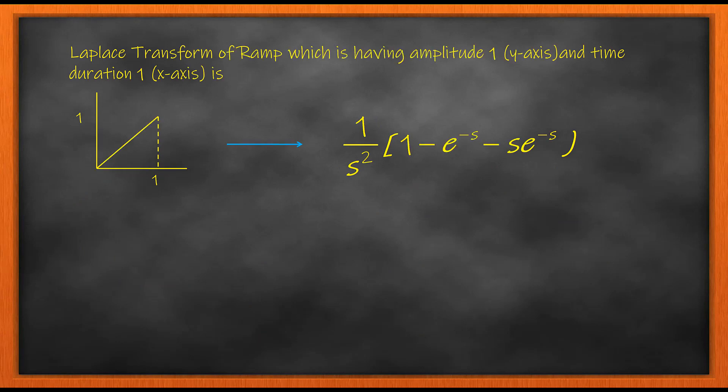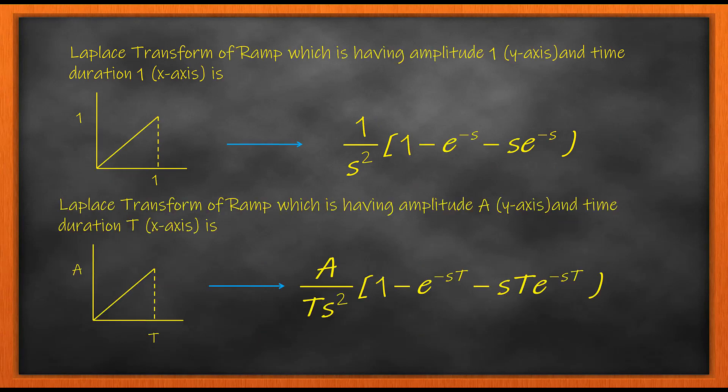The Laplace transform of ramp has different variants where the amplitude and time can take upon different values. In this case the amplitude is A and time duration is T, which is the most standard form for the Laplace equation.